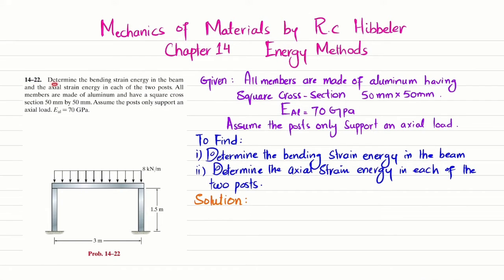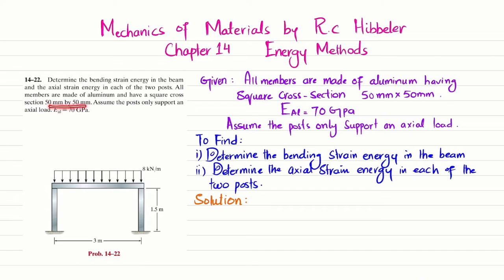The statement of this problem is: determine the bending strain energy in the beam and the axial strain energy in each of the two posts. All members are made of aluminum with a square cross section of 50 mm by 50 mm. Assume the posts only support vertical axial load. The modulus of elasticity of aluminum is 70 GPa.